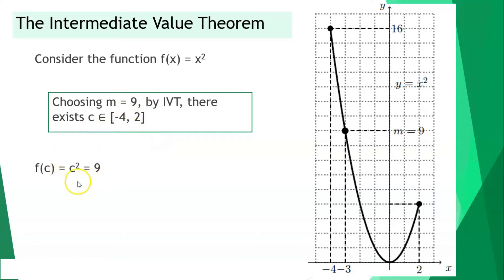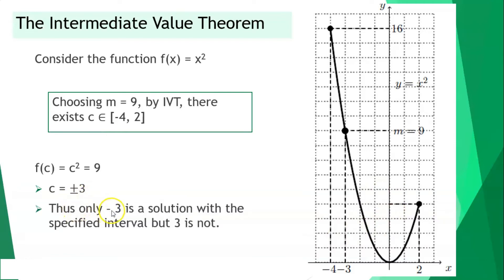So c squared is equal to 9. Solving for c, getting the square root of both sides, our c here will be positive and negative 3. We will only consider negative 3 because negative 3 is within negative 4 and positive 2. But 3 is not considered as a solution to the specified interval because the value for x ends at positive 2.